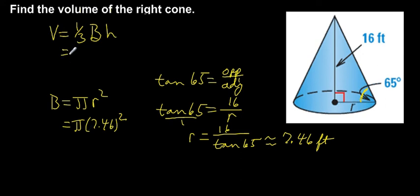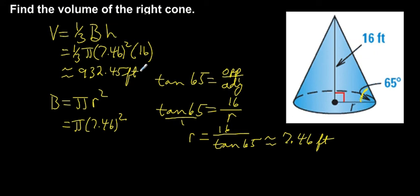Now, my volume will be one-third times that π times 7.46 squared, area of the base, multiplied times the height, which is 16. And so my volume of my cone comes out to be approximately 932.45 cubic feet.